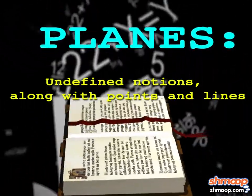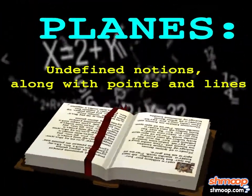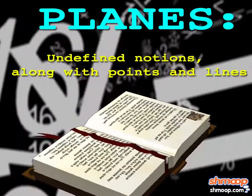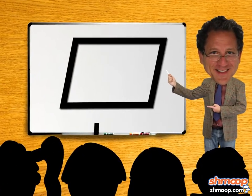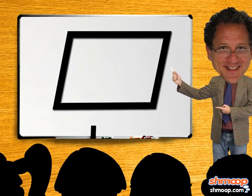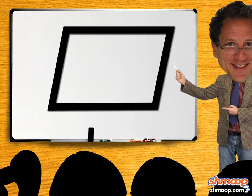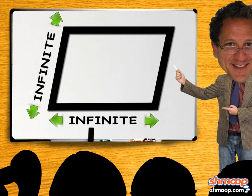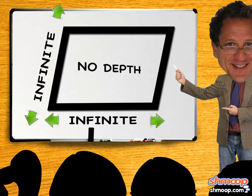In geometry, planes are undefined notions along with points and lines. Check this out. Okay, it just means that defining them is a bit tricky. But we can still describe them. Planes have infinite length and infinite width, but no depth at all.